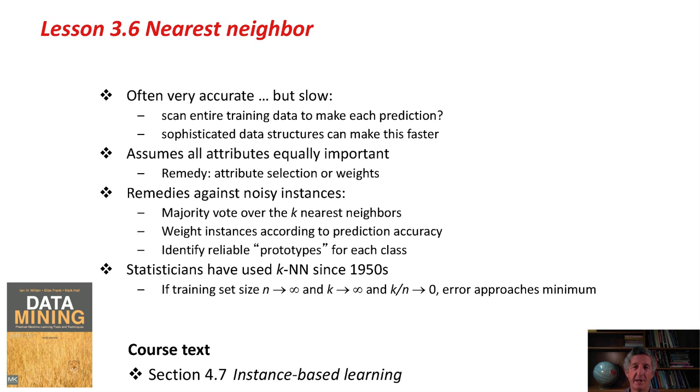This is a very old method. Statisticians have used k nearest neighbors since the 1950s, and there's an interesting theoretical result that if the number of training instances approaches infinity, and k also gets larger in such a way that k over n becomes 0, but k also approaches infinity, the error of the k nearest neighbor method approaches the theoretical minimum error for that data set. There's a theoretical guarantee that with a huge data set and large values of k, you're going to get good results from nearest neighbor learning.